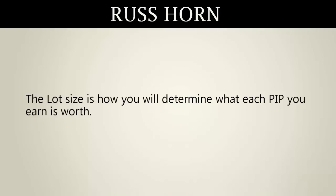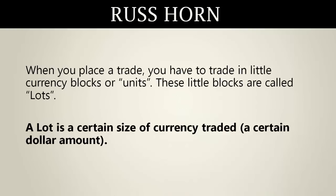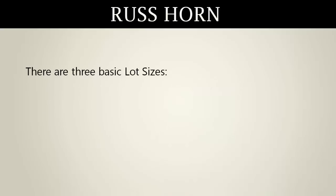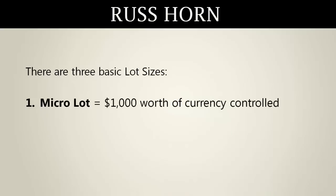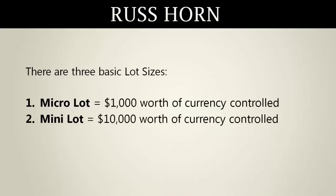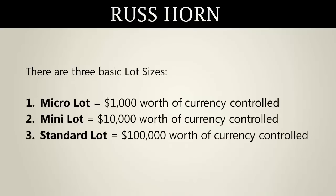The lot size is how you will determine what each pip you earn is worth. When you place a trade, you have to trade in little currency blocks or units. These little blocks are called lots. A lot is a certain size of currency traded or a certain dollar amount. There are three basic lot sizes: the micro lot, which is $1,000 worth of currency controlled; the mini lot, which is $10,000 worth of currency controlled; and the standard lot, which is $100,000 worth of currency controlled.